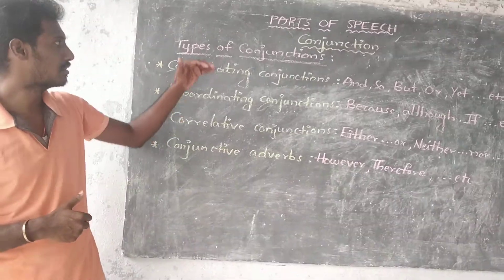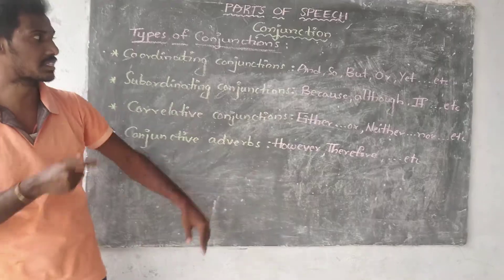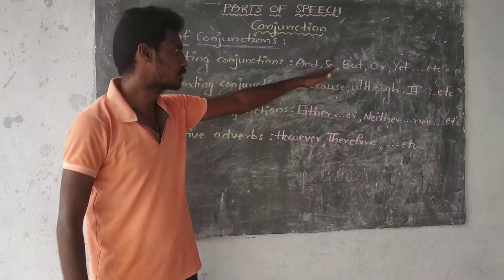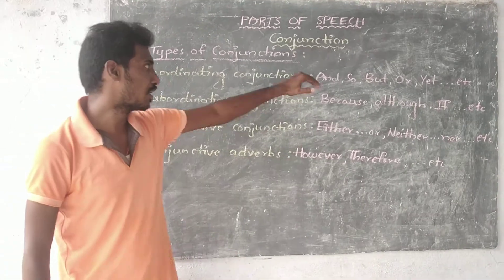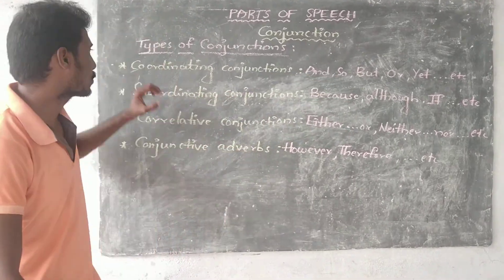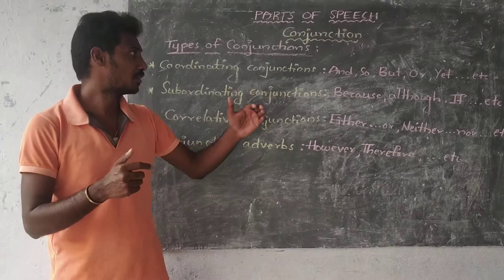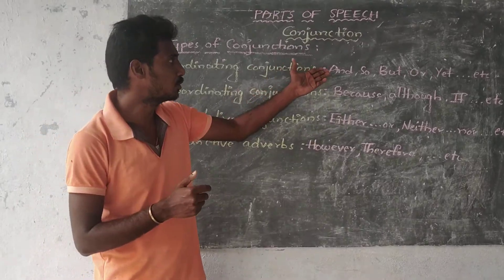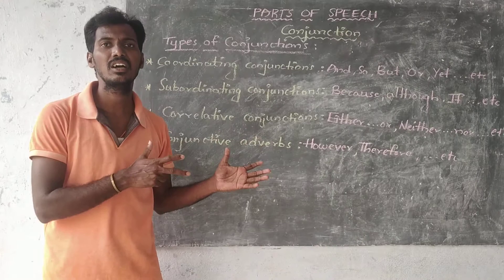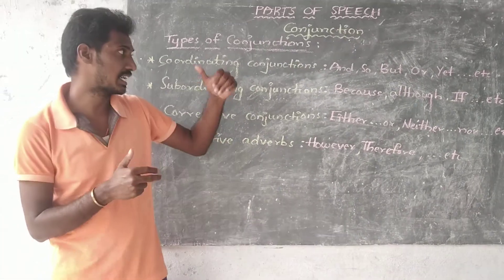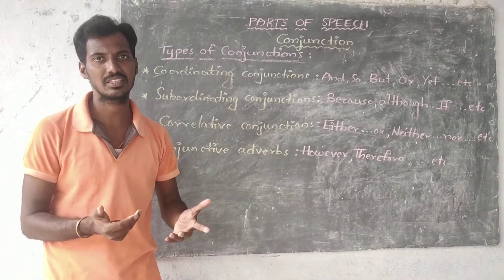Now, look at the coordinating conjunctions. There are a few examples: and, so, but, yet, etc. These are all coordinating conjunctions. By using these conjunctions, we can combine sentences, phrases, and clauses.